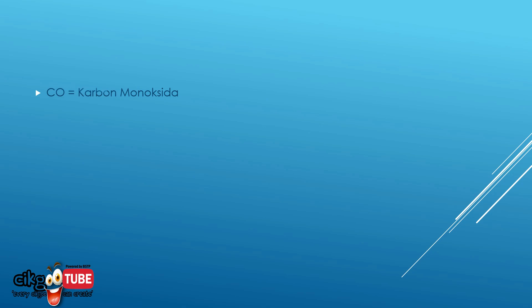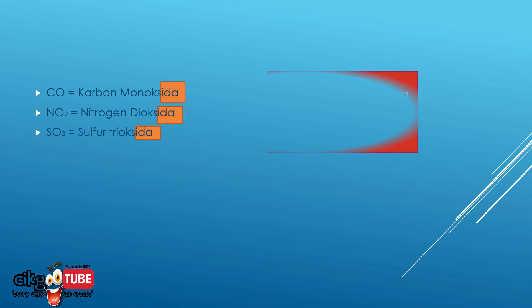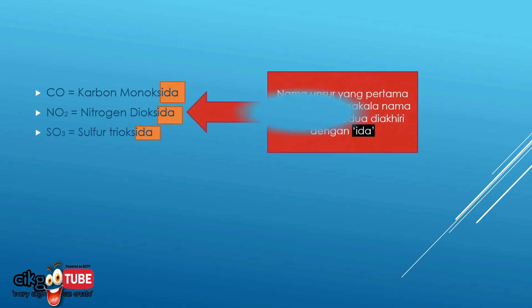Bagi penamaan sebatian, nama unsur yang kedua bahagian belakang kita letakkan perkataan '-ida'. Contoh seperti karbon monoksida, nitrogen dioksida, dan sulfur trioksida.